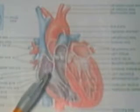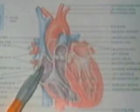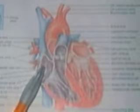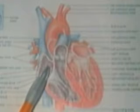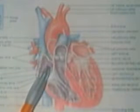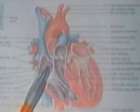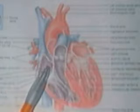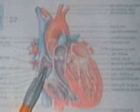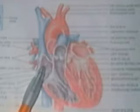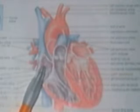The pacemaker cells in the sinoatrial node of the right atrium determine the firing rate of the entire heart. They do this by making a pacemaker potential of the heart.